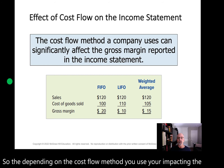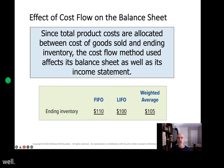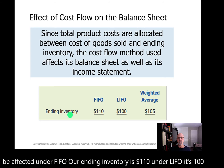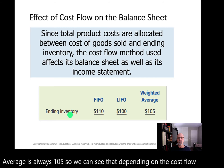On the balance sheet side, depending on the method that you use, your ending inventory is going to be affected. Under FIFO, our ending inventory is $110. Under LIFO it's $100. And under weighted average, it's always $105. So we can see that depending on the cost flow method you choose, you're going to affect not only the balance sheet but the income statement.